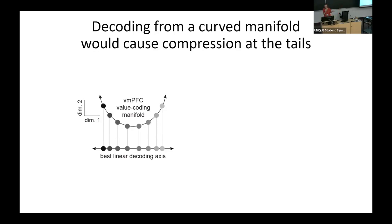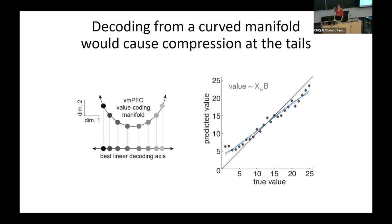And we tested this prediction, so we trained and tested the decoder on our data. And as you can see, this prediction was confirmed. So in comparison to identity lines, so the perfect prediction, high values are lower than predicted and low values are higher than predicted.